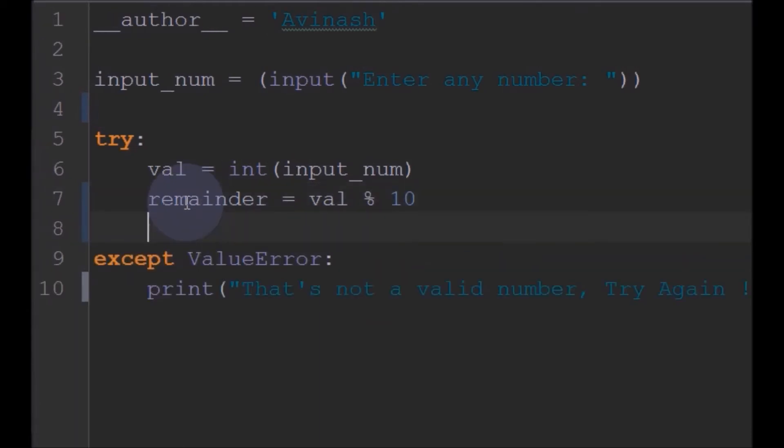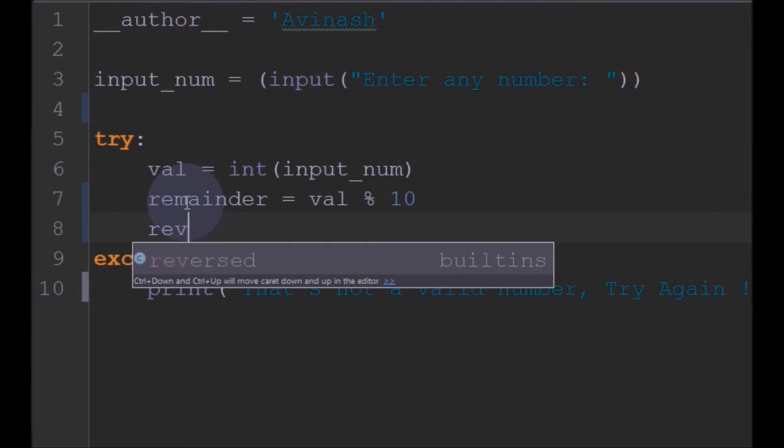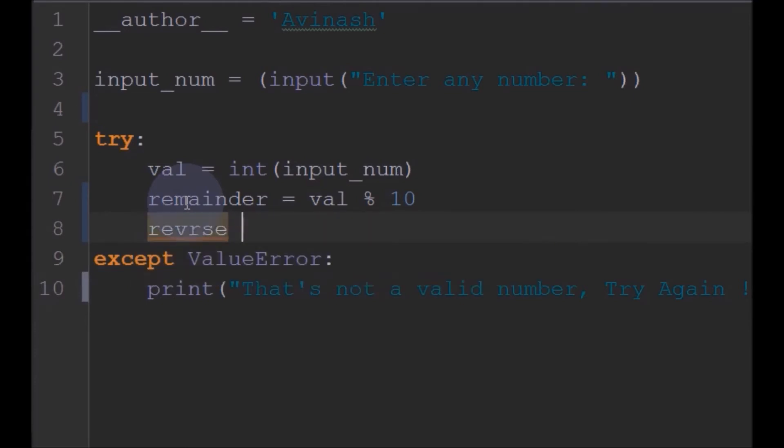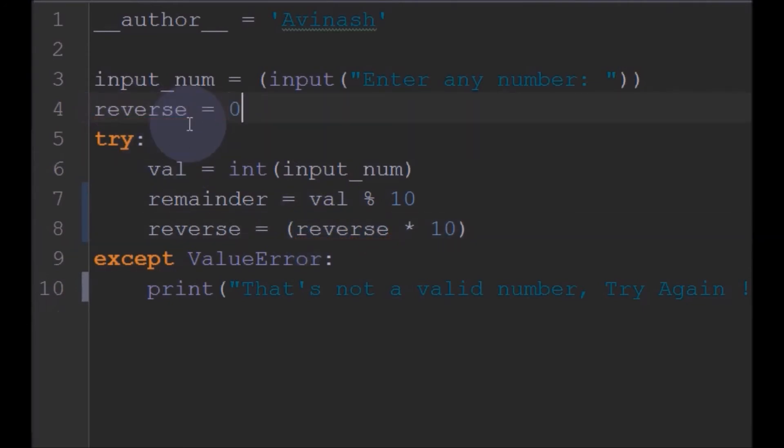So, after finding the remainder, we will create a new variable called reverse. We have first initialized this reverse to 0. What we will do is we will multiply this reverse with 10 and then add the remainder to it.